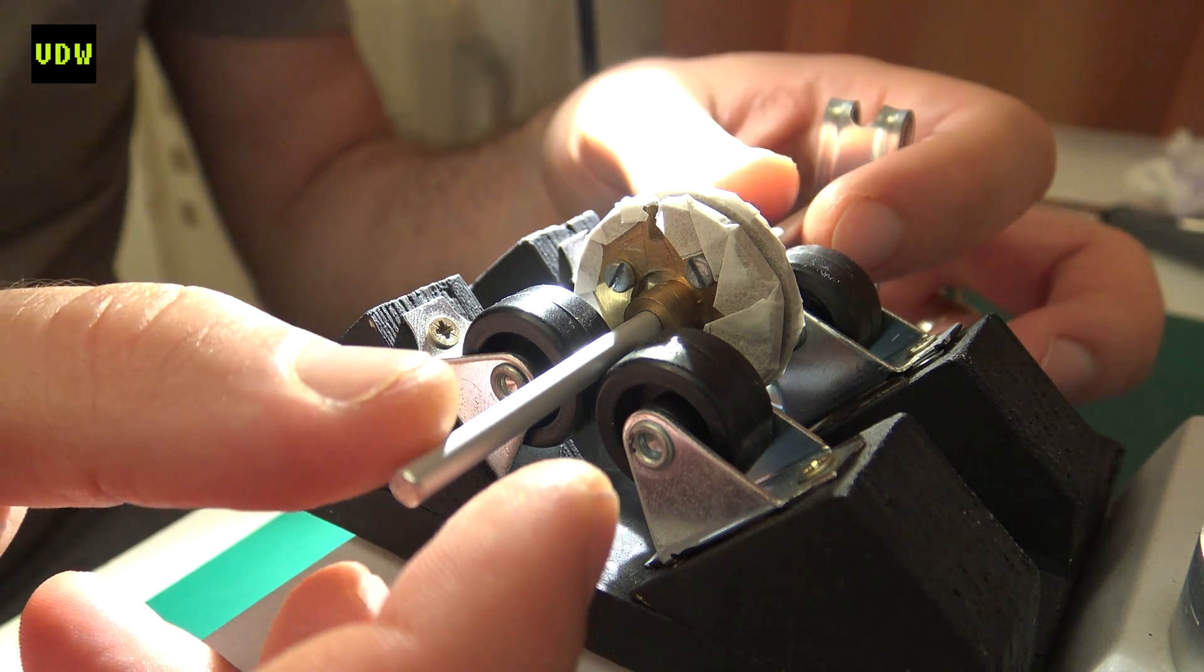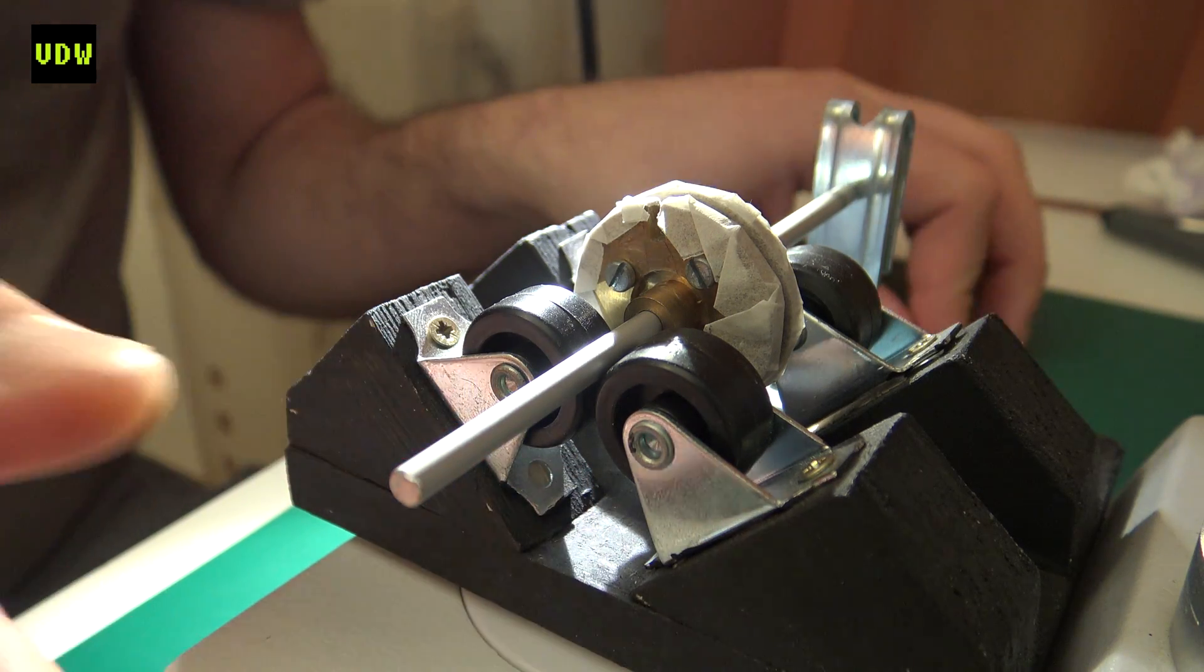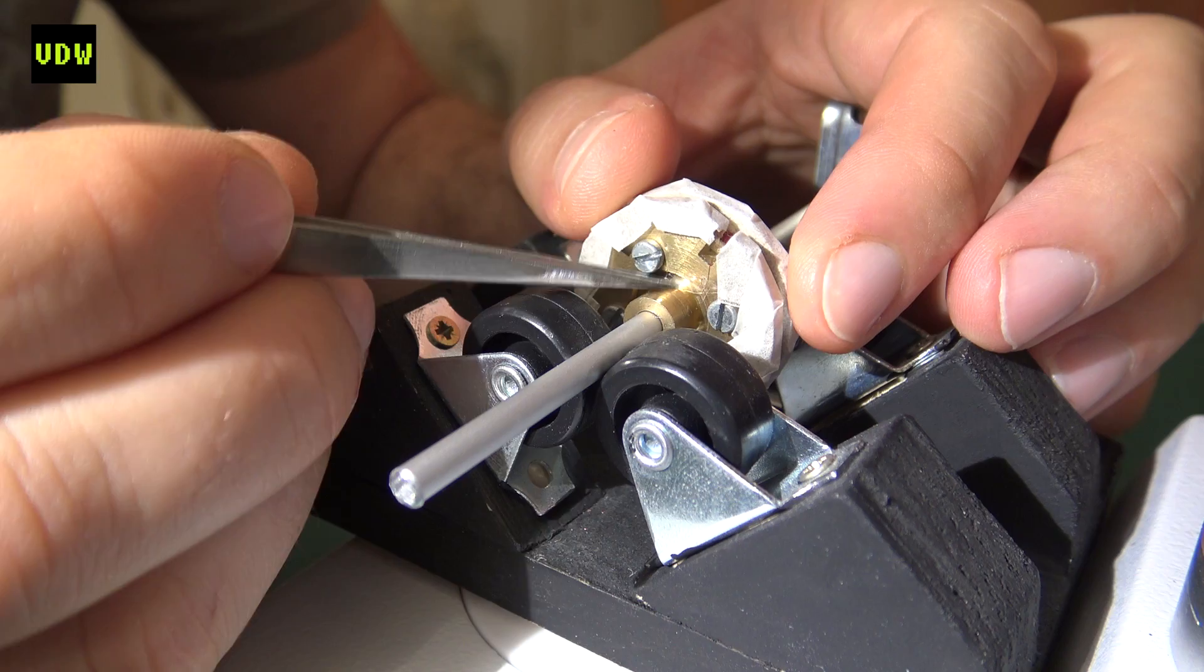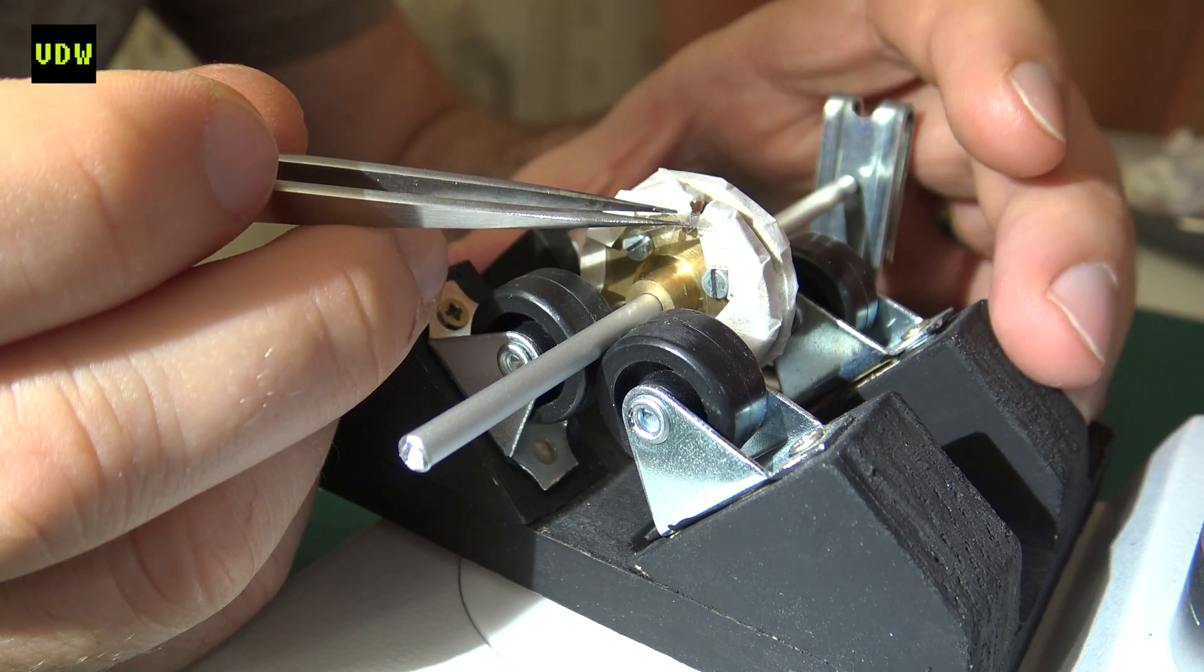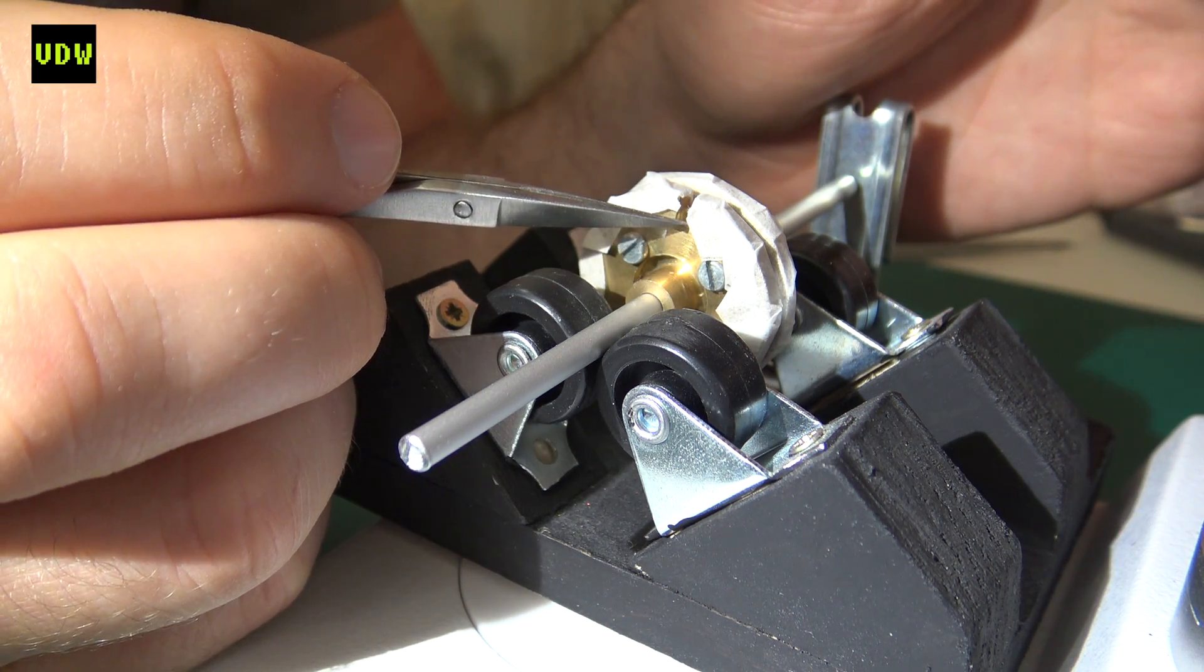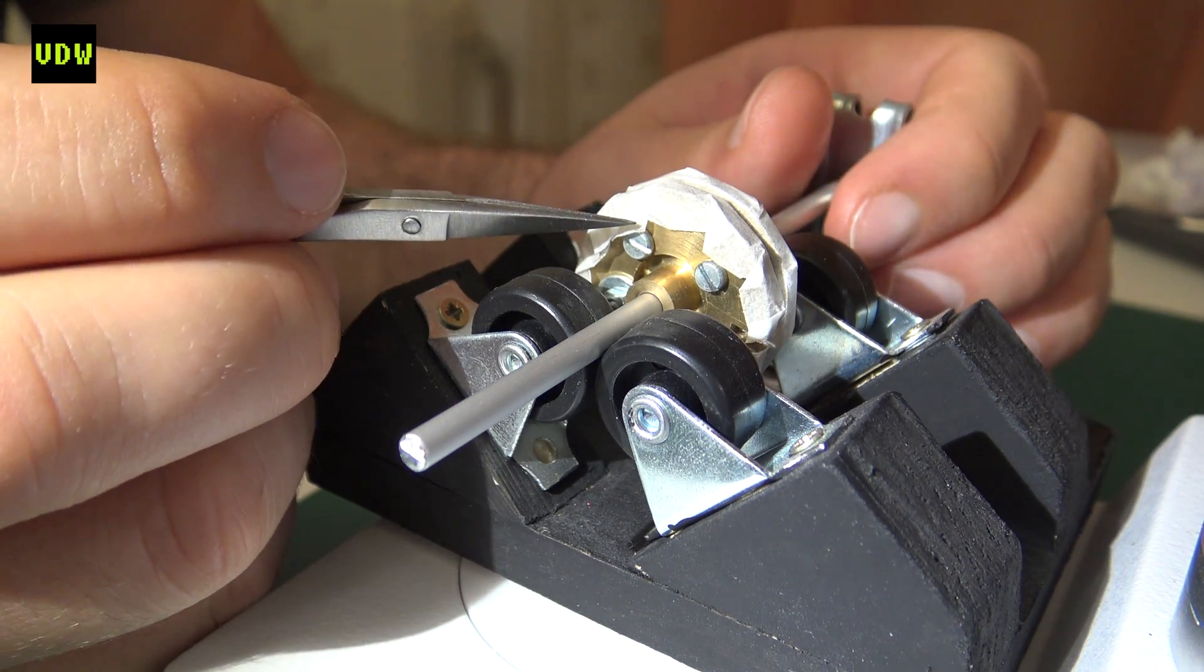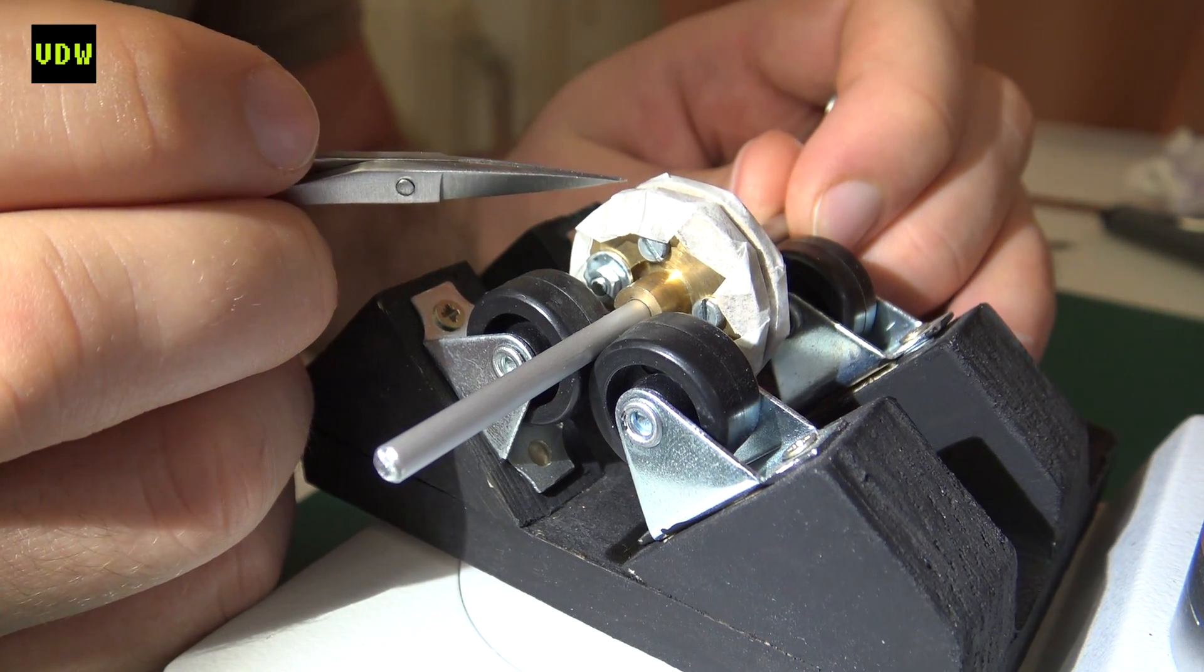So now we are 24 hours later and it's time to remove the coil from the former. For that, we must remember that we pulled out the ends right about there and we have to take those out first. Two perfect ends. Now we will remove the bolts that hold the former together and then we will try to do the most delicate part, and that is remove the coil from the former. Hopefully it will stay together.